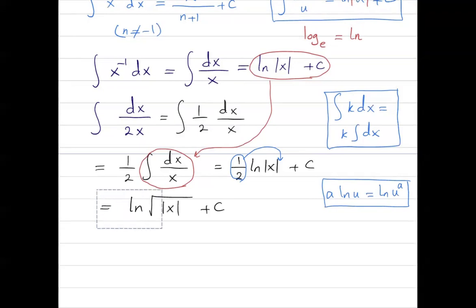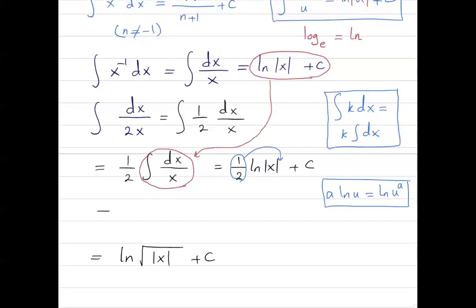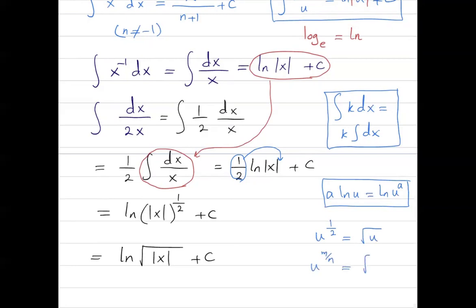So the one-half acts as the exponent of your ln argument. This is equal to ln of the square root of the absolute value of x plus C, because this can be written as ln of the absolute value of x to the power one-half plus C. Since x to the power one-half is the square root of x, that's how we calculate the integral of dx divided by 2x — you get ln of the square root of the absolute value of x plus C.